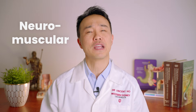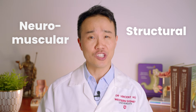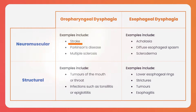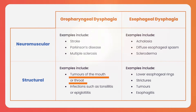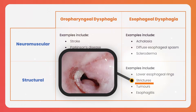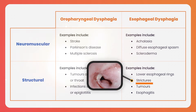These two groups can be further subdivided into problems that affect function — which are inherently neuromuscular in origin, meaning nerves and muscles are affected — and problems that affect structure, which can be conditions that obstruct or are inflammatory. As illustrated in this table, conditions such as stroke are neuromuscular causes of oropharyngeal dysphagia, whereas achalasia can be a neuromuscular cause of esophageal dysphagia. Tumors of the mouth or throat are a structural cause of oropharyngeal dysphagia, whilst an esophageal stricture or narrowing is a structural cause of esophageal dysphagia.